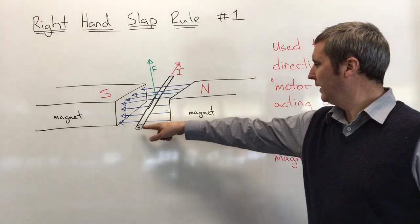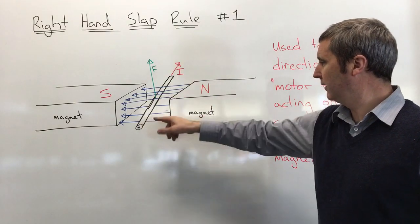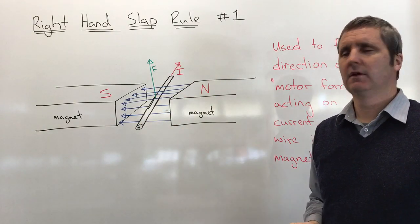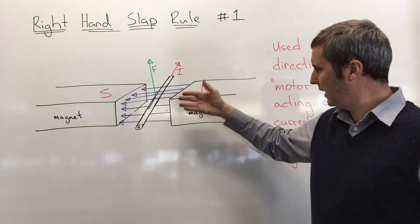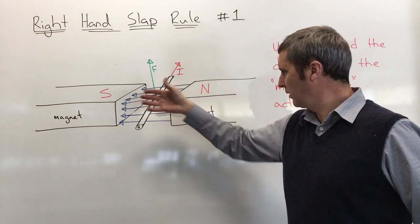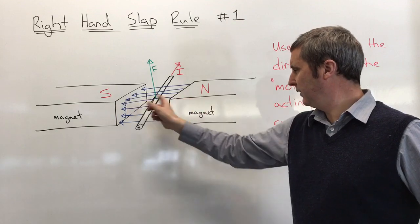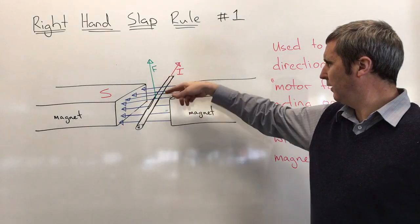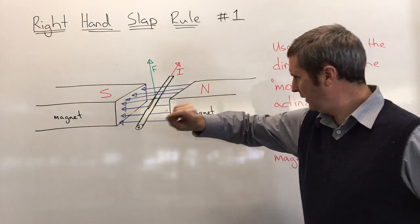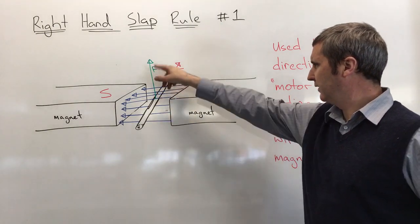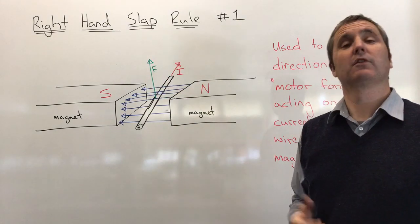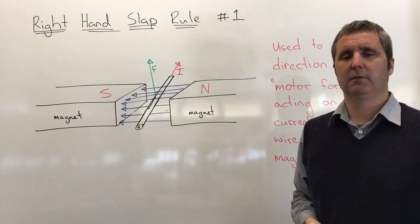The force acts on a wire that carries current in a magnetic field. You can see here we've got all those three components: we've got a magnetic field going from north to south, shown by the blue field lines; we've got our current going into the whiteboard, represented by this wire; and you can see I've drawn the force there already because I've already worked out the right-hand slap rule.